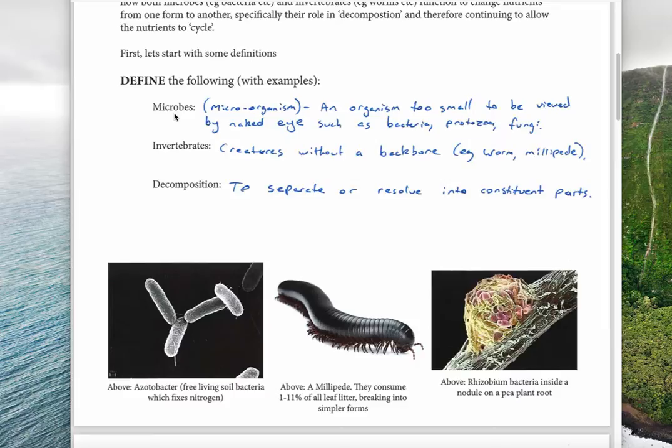Invertebrates are basically any creature without a backbone—examples here are worms or millipedes. We've got the millipede here as an example, which eats things and chews them, breaking them down in their digestive system.